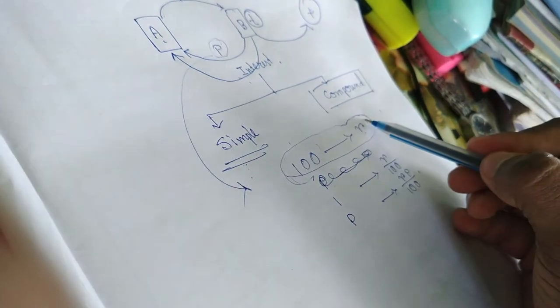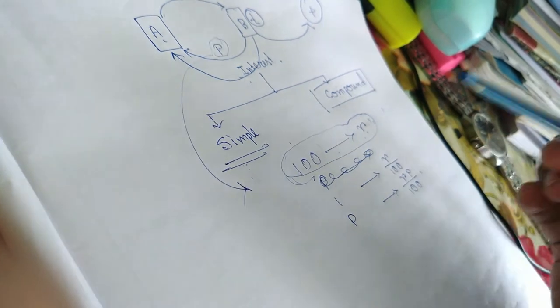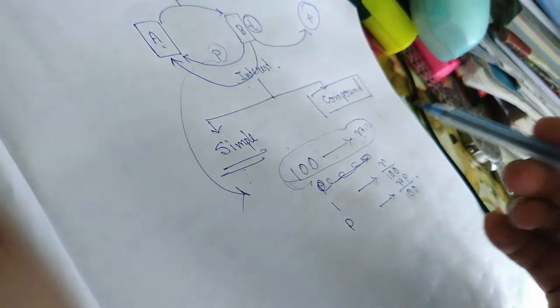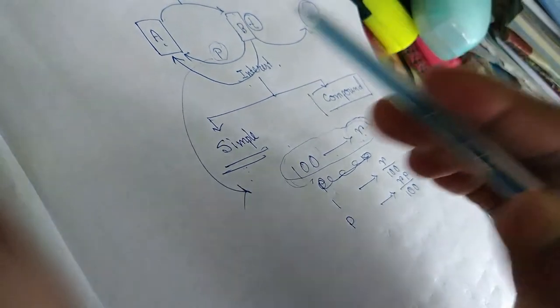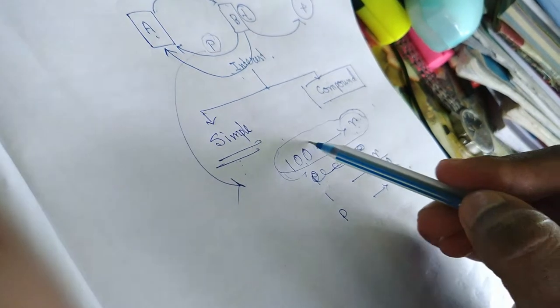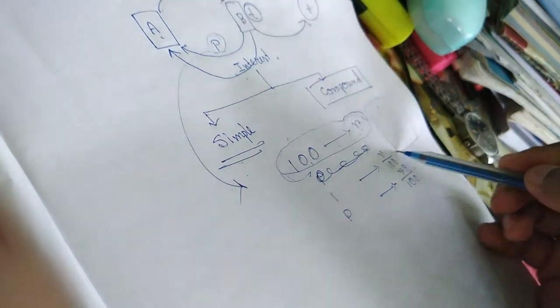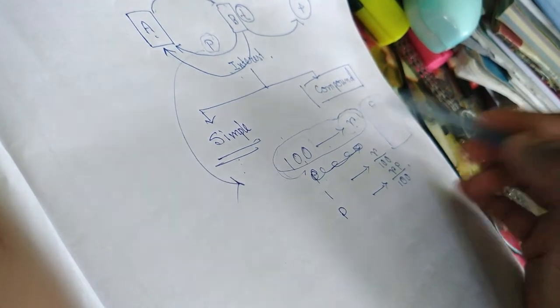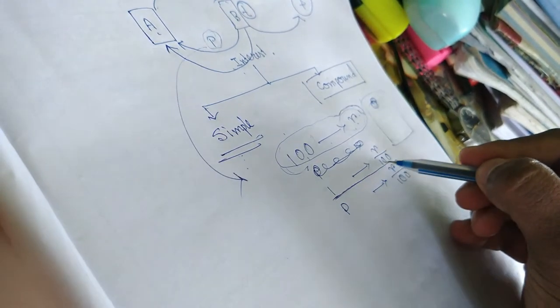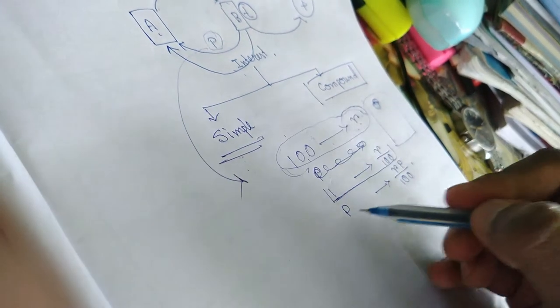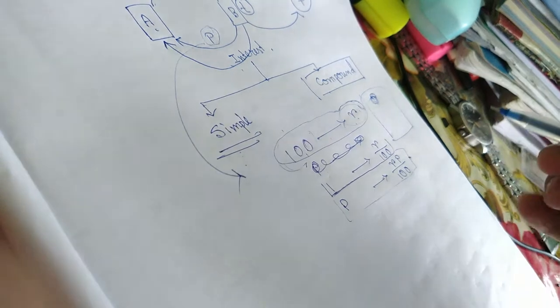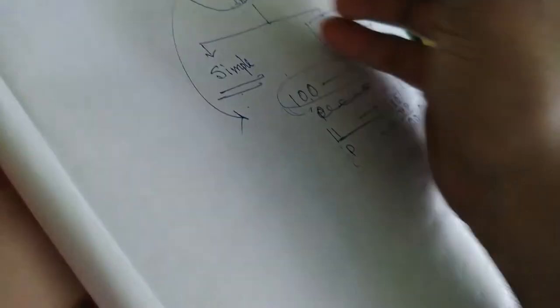This R is called the rate of interest and it is denoted by percentage. R percent interest per annum means at the end of every year, this R amount of money will be added to the principal for every hundred rupees. If the total principal is P, then for every single rupee, R by hundred rupees has to be paid extra.